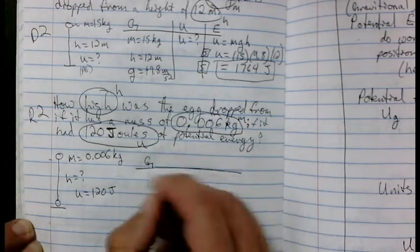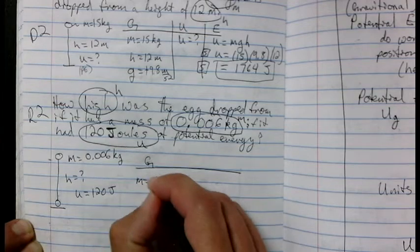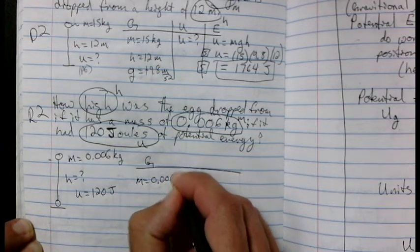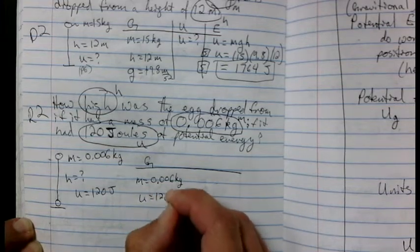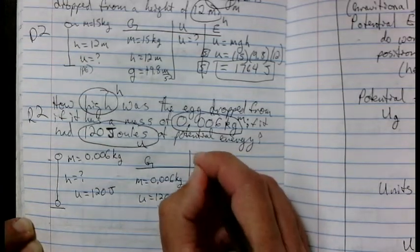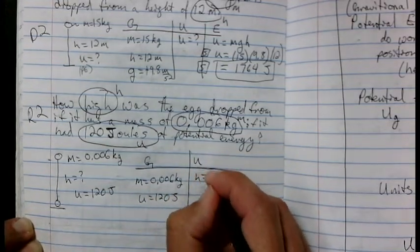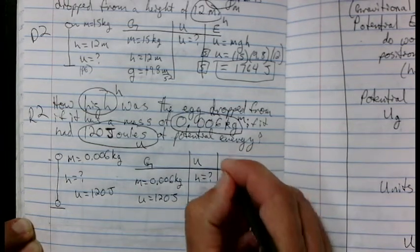Now let's tell our story of an object being dropped. Height is our question. Mass is 0.006 kilograms. And U equals 120 joules. Given. We're given a mass equal to 0.006 kilograms. U equals 120 joules. Unknown. Height equals question mark. Equation. We only have one equation.